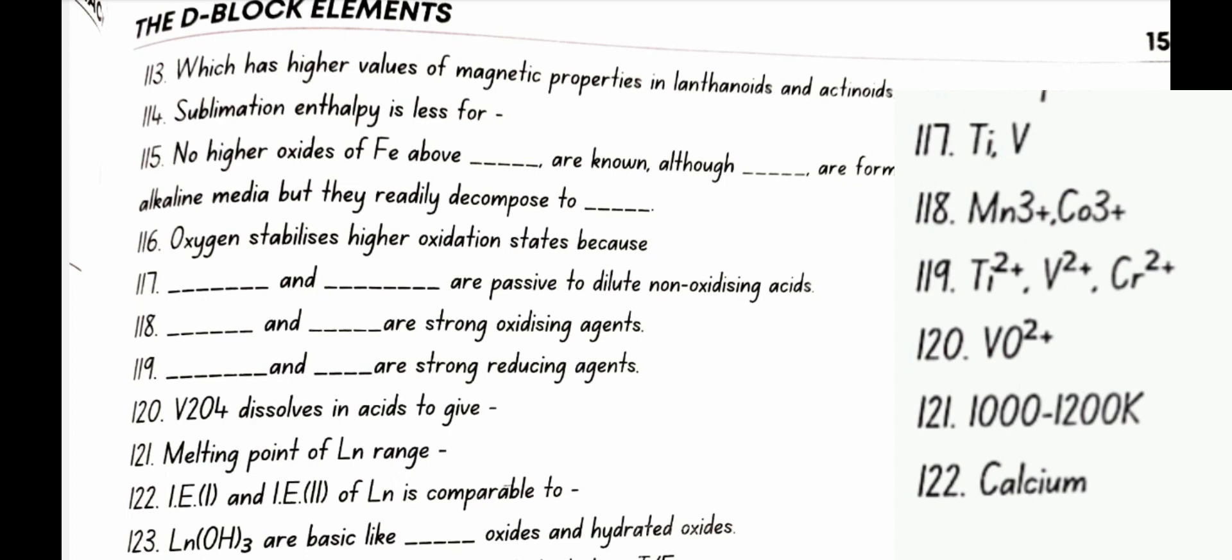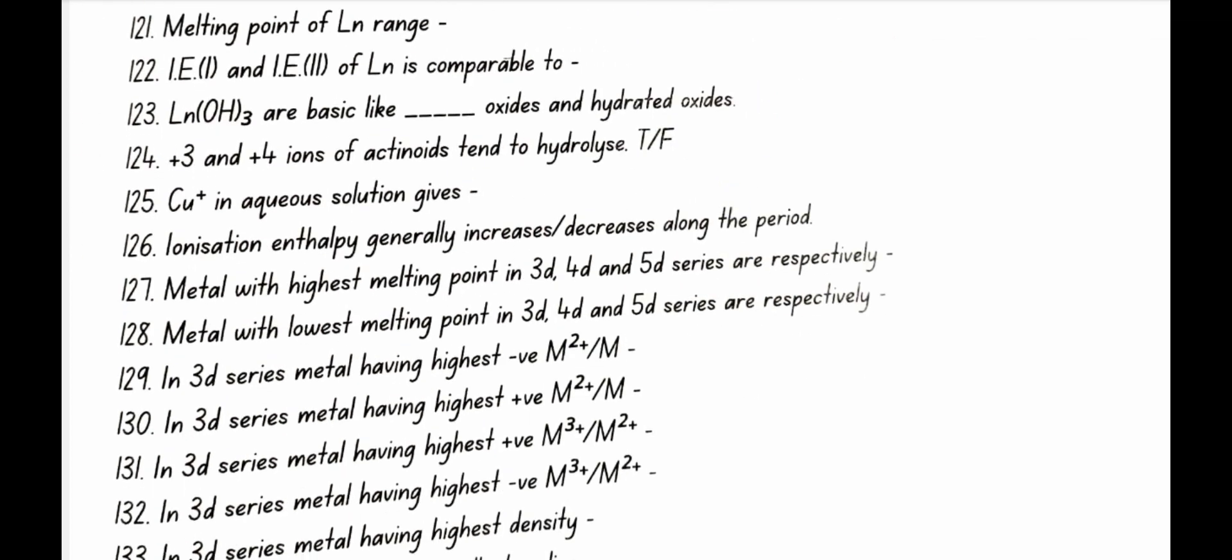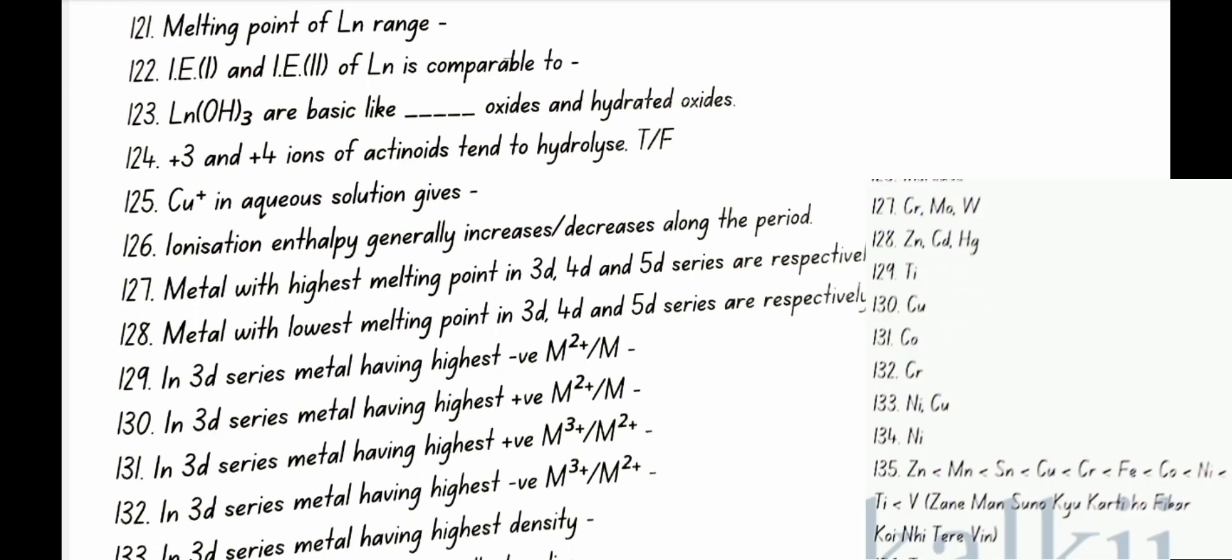V2O4 dissolves in acids to give VO2 plus. Melting point of Ln ranges from 1000 to 1200 kelvin. IE1 IE2 of Ln is comparable to calcium. Ln(OH)3 are basic like alkaline earth metal oxides and hydrated oxides. Plus 3 and plus 4 ions of actinoids tend to hydrolyze. Yes true. Co2 plus in aqueous solution gives Co2 plus plus Co. Ionization enthalpy generally increases along the period.